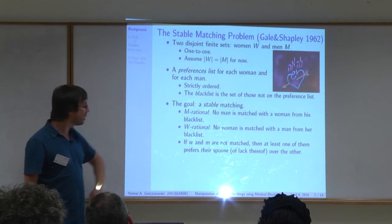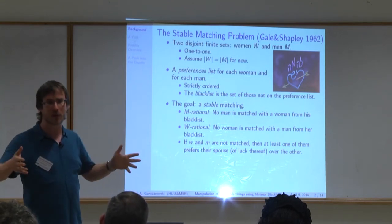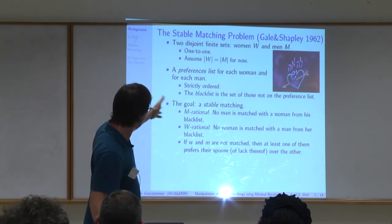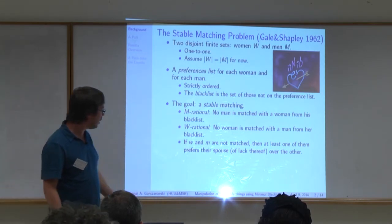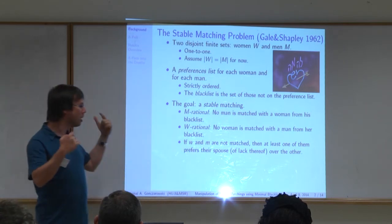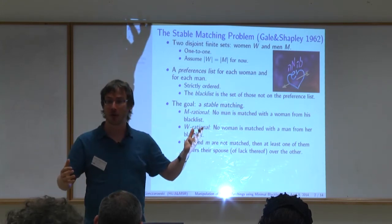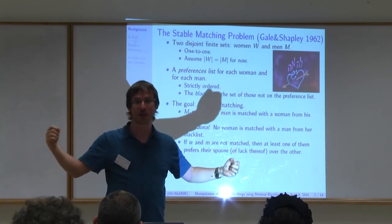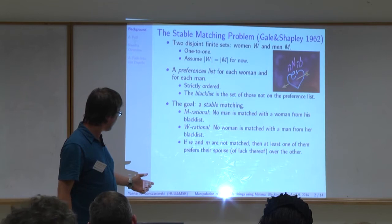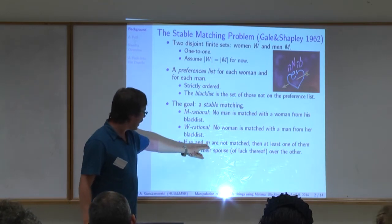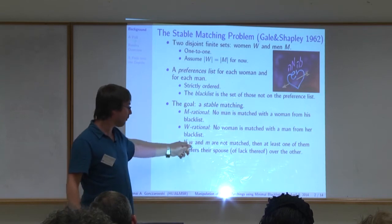The goal is to find a stable matching. Stable means three things: M-rational — no man is matched with a woman from his blacklist; W-rational — same thing reversed; and pairwise stability — if W and M are not matched, then at least one of them prefers their current condition over being matched with the other. In other words, if M prefers W over his match, then W prefers her match over M.